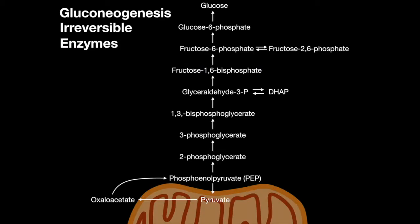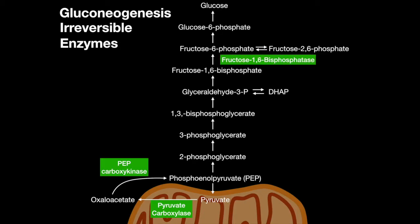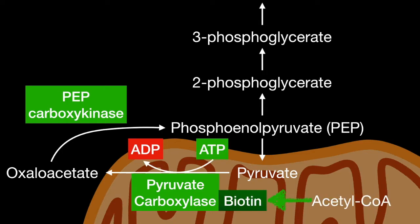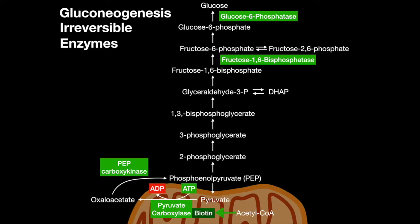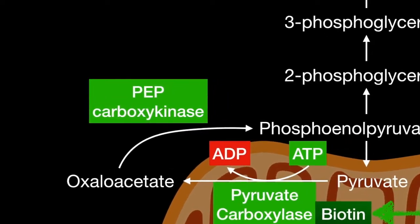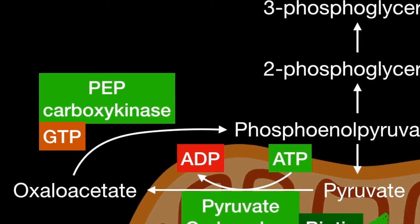The irreversible enzymes of gluconeogenesis are pyruvate carboxylase, phosphoenolpyruvate carboxykinase, fructose-1,6-bisphosphatase, and glucose-6-phosphatase. Pyruvate in the mitochondria is turned into oxaloacetate by pyruvate carboxylase. This enzyme requires biotin and ATP, and is activated by acetyl-CoA. Phosphoenolpyruvate carboxykinase turns oxaloacetate in the cytosol into phosphoenolpyruvate, a process requiring GTP.